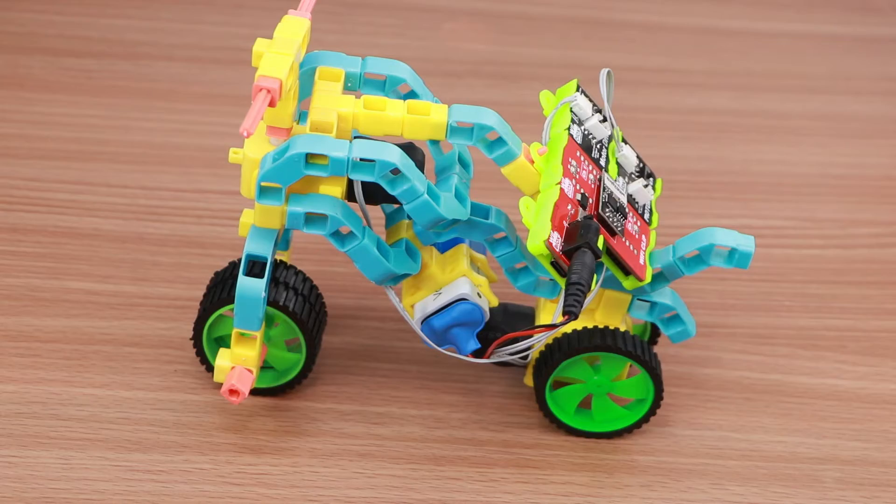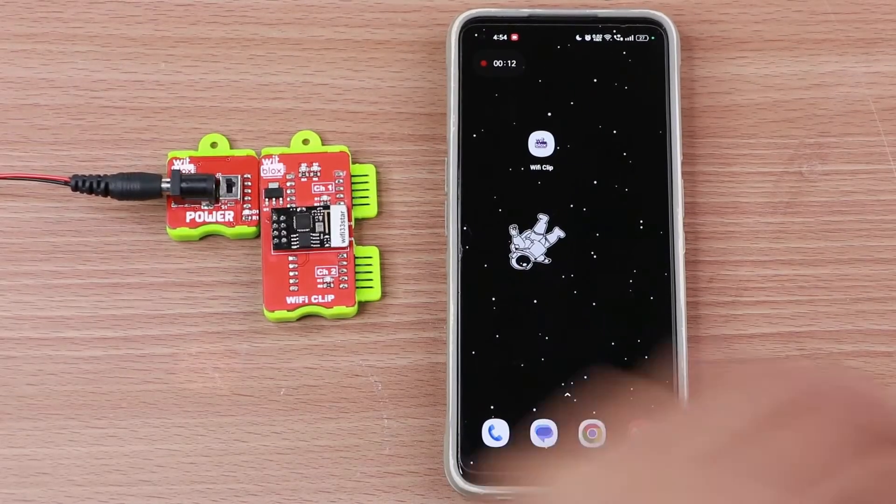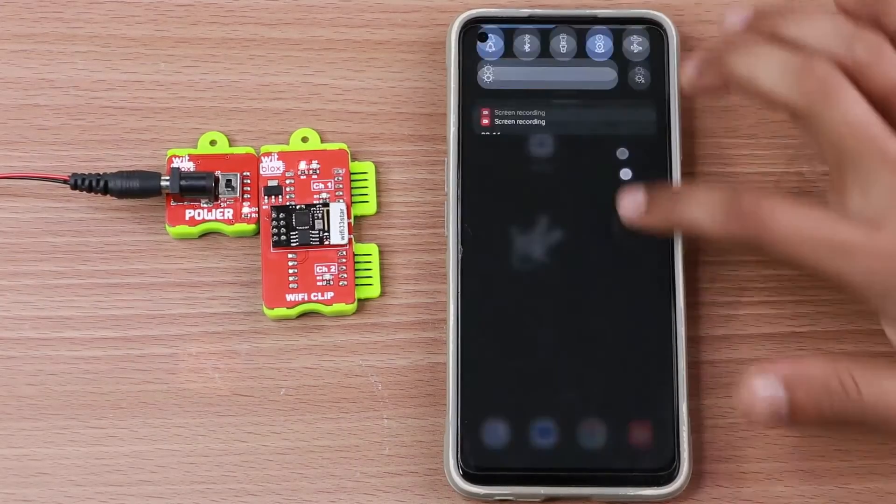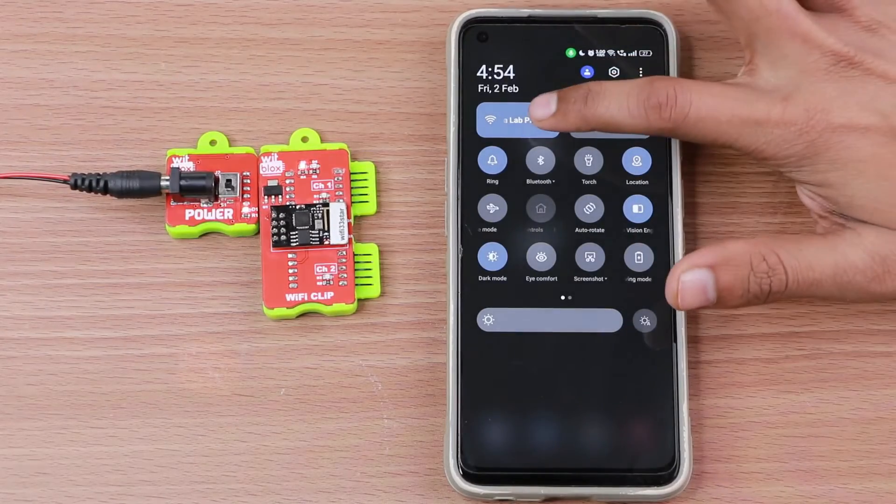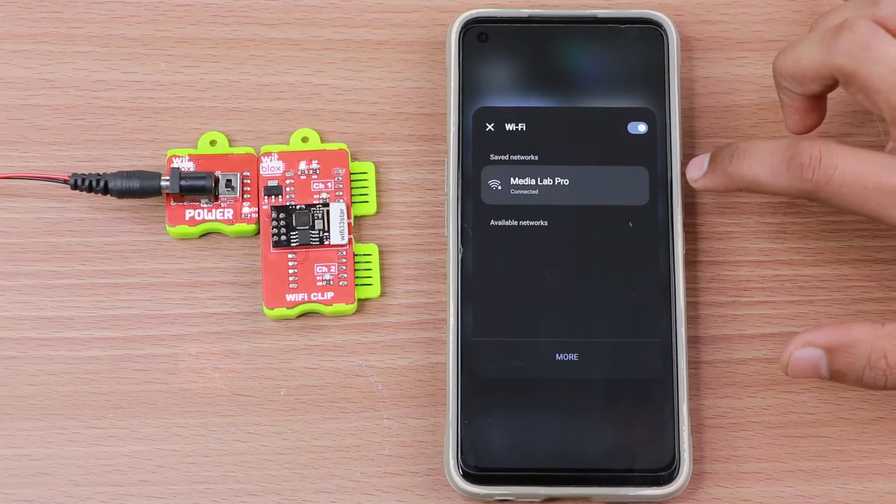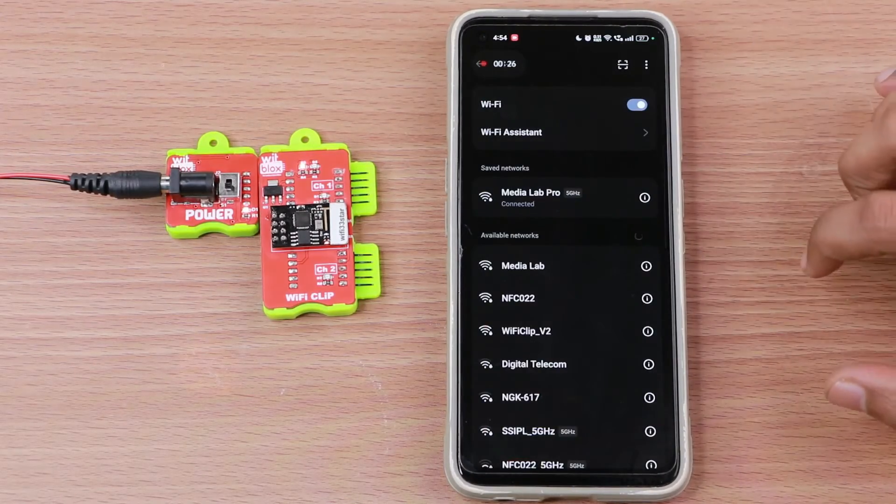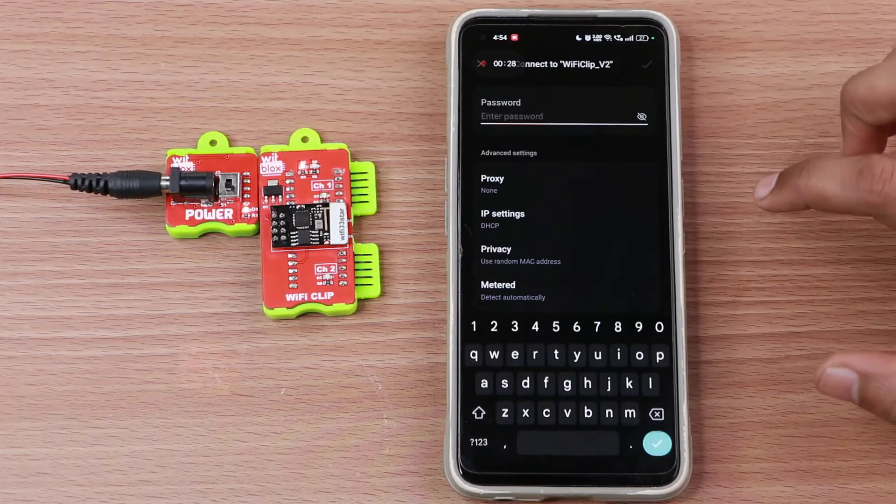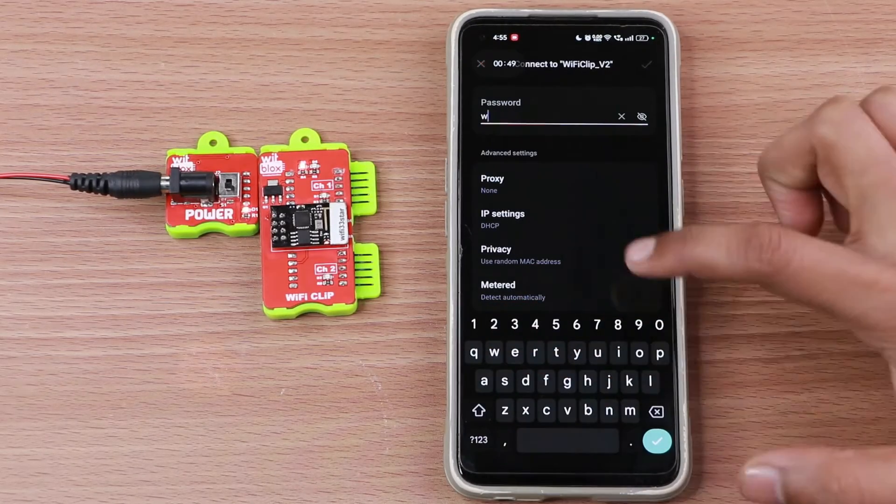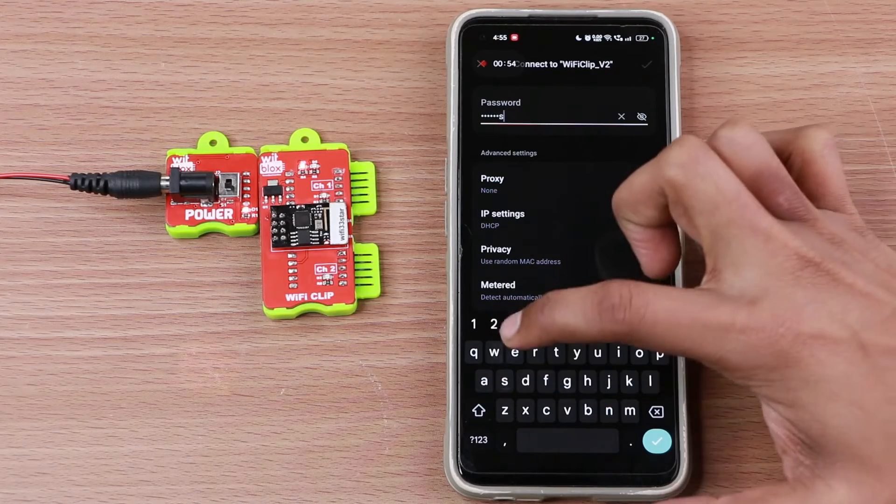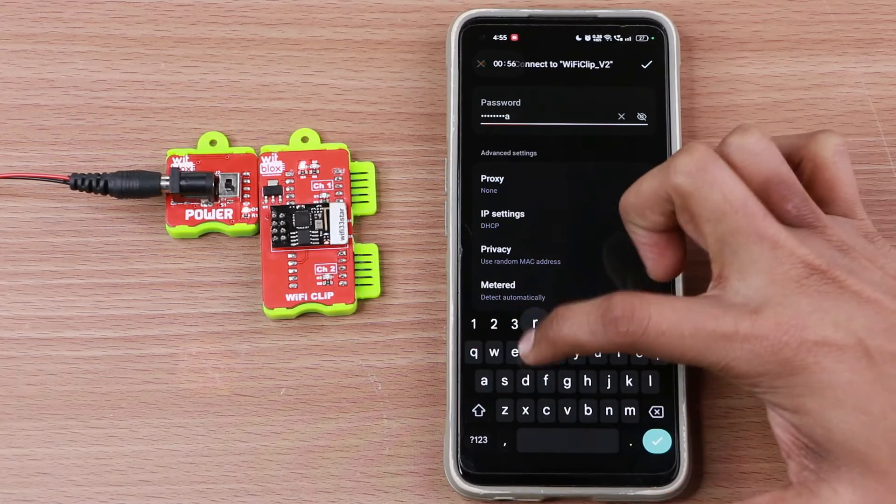Now let's see how to control our Wi-Fi bike using our phone. First turn on the power blocks. This ensures that Wi-Fi blocks is receiving power. Now turn on your phone's Wi-Fi and go to the phone's Wi-Fi settings. Here search for the Wi-Fi network named Wi-Fi Clip V2. Now connect to the Wi-Fi Clip V2 network by entering the password of the Wi-Fi blocks. The password is mentioned on the Wi-Fi chip.